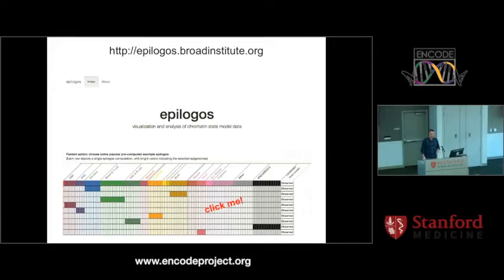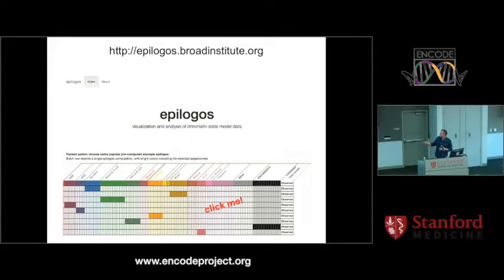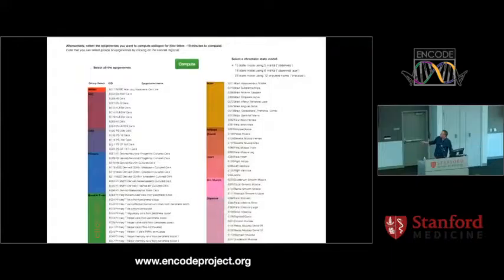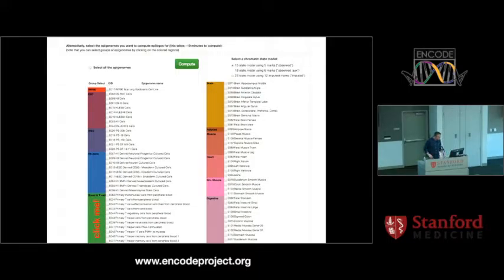There is a prototype website out there that allows you to generate these EpiLogos for different sets of samples. The one I showed before is based on all 127 Roadmap epigenomes, but here on this website you can select any arbitrary subset of epigenomes. The table you see first shows a number of pre-computed scenarios — if you hover over each cell, you can see which epigenomes are included. If you don't like any of the pre-computed samples, scroll down and choose any combination. Mind you, this takes a little bit of time to compute — like 10 minutes — so if you want faster results, choose from single categories or simple combinations.